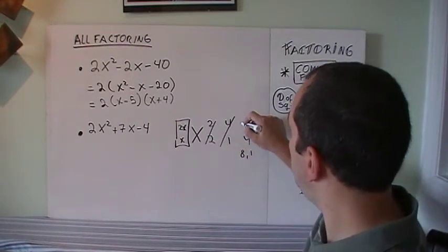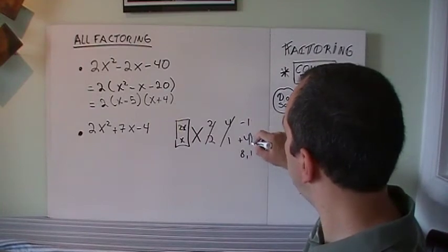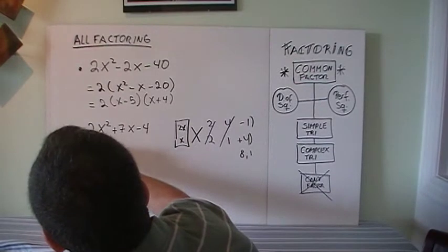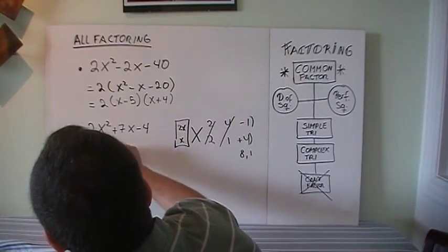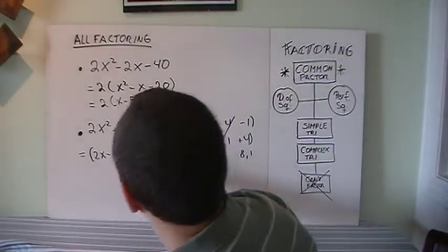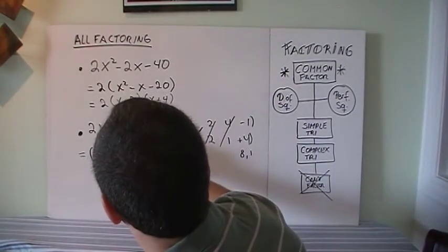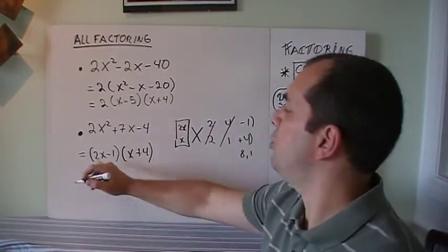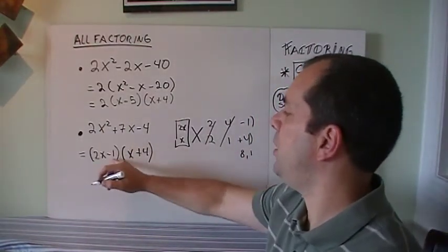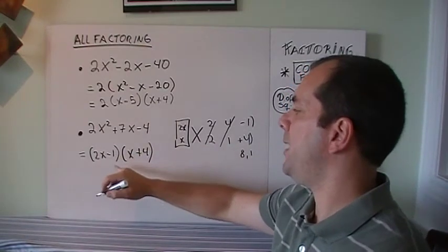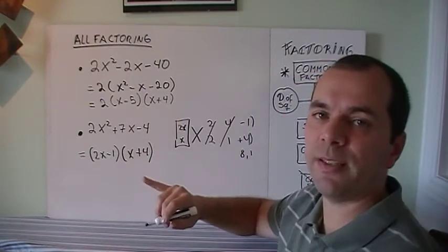As long as it's plus 8 minus 1, so this should be minus 1, this should be plus. So that's 2x - 1 and x + 4. And as always, I expand it, right? So 2x times x is 2x², minus 1 times 4 is minus 4, and minus x plus 8x gives me 7x, so that's right.